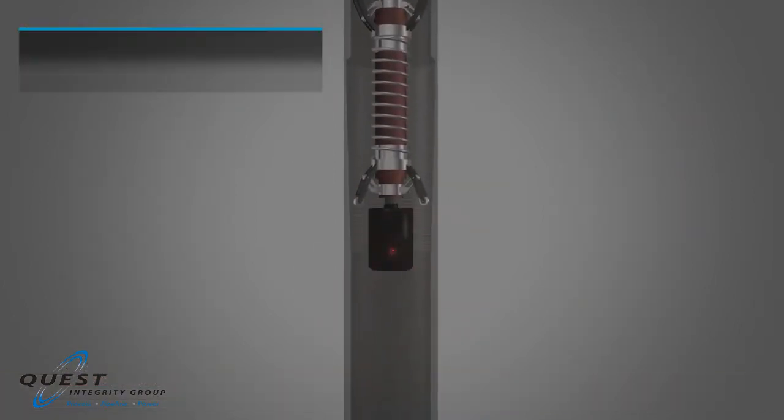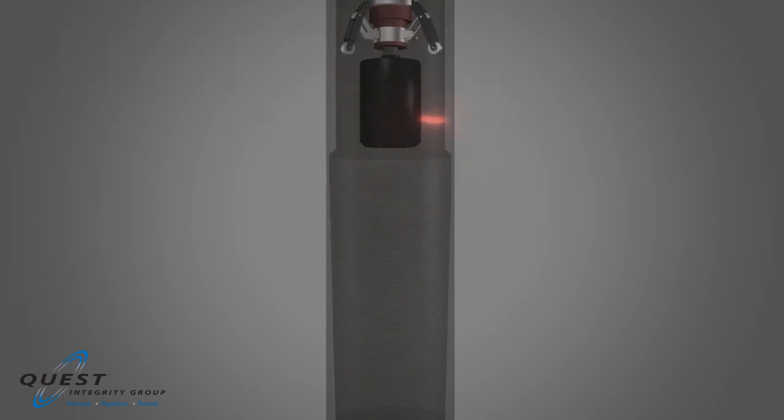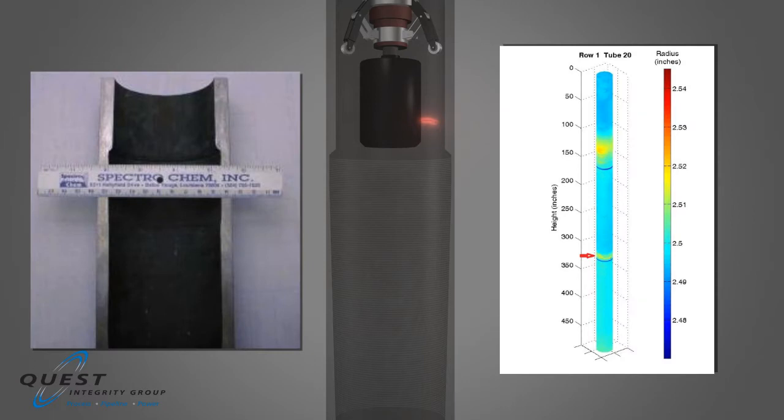LOTUS detects an internal manufacturing gouge inadvertently caused by the manufacturer. Gouges on the tube's internal surface can generate localized stress risers, causing premature cracking.